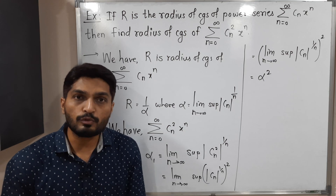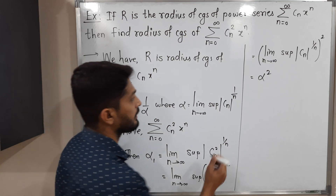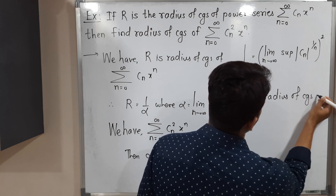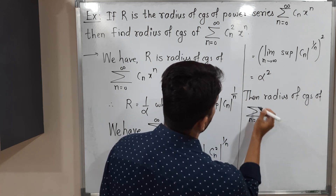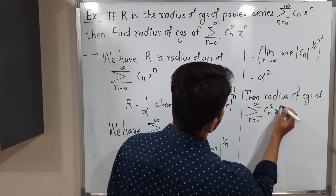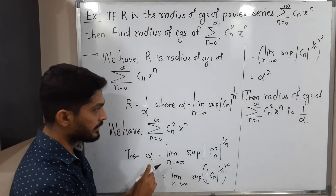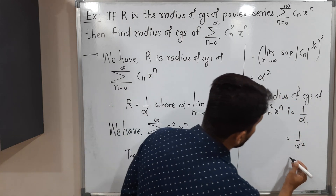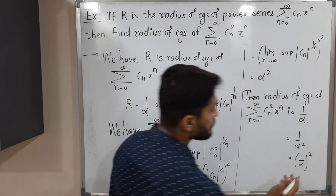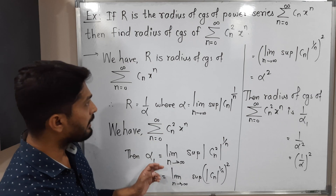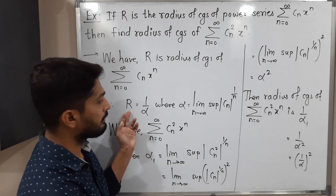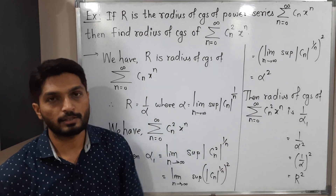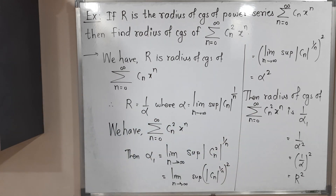Since α₁ = α², the radius of convergence of the power series summation cₙ² xⁿ is 1 / α₁ = 1 / α² = (1/α)² = R². Therefore the radius of convergence of this power series is R².